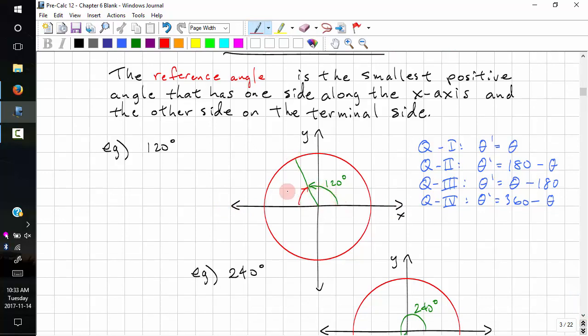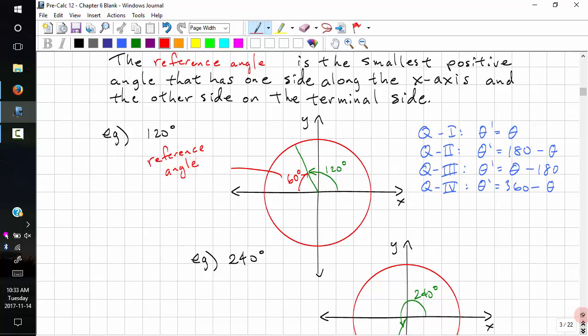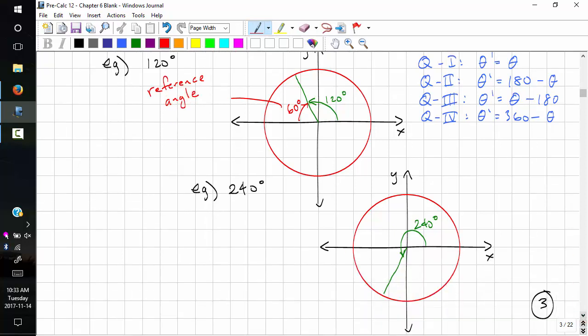However, we want the closest angle. That's 60 degrees. So this is the reference angle. We want the closest angle to the x-axis, and this is the angle, 60 degrees.